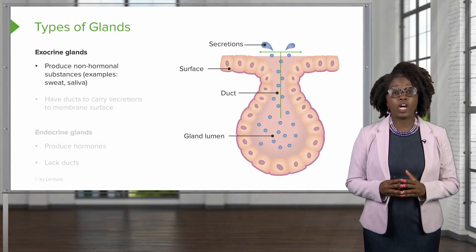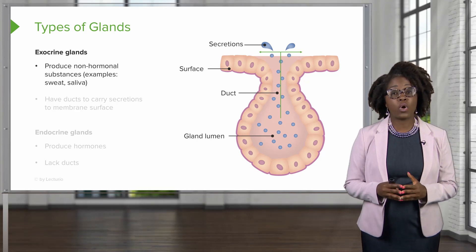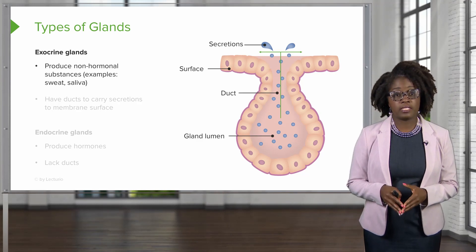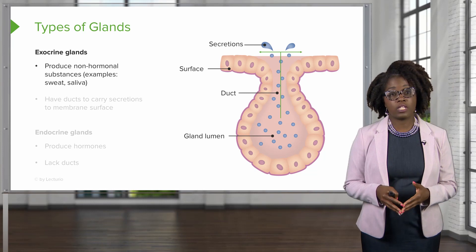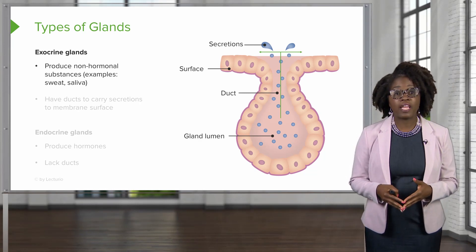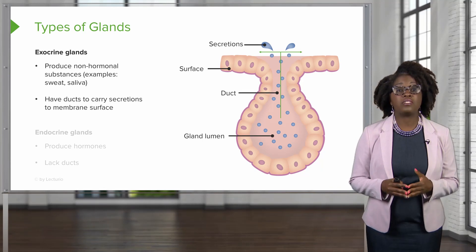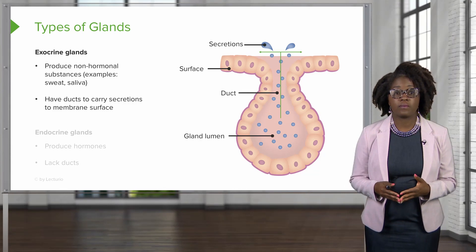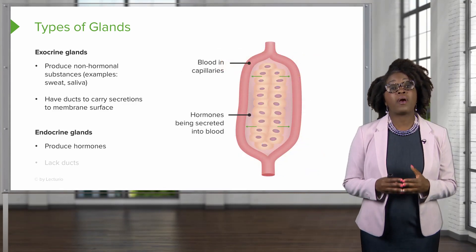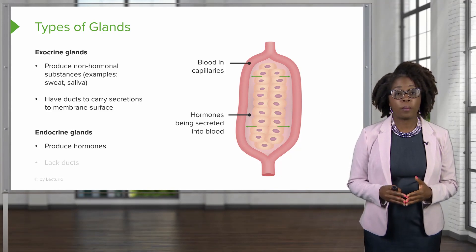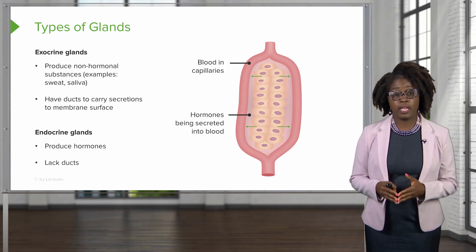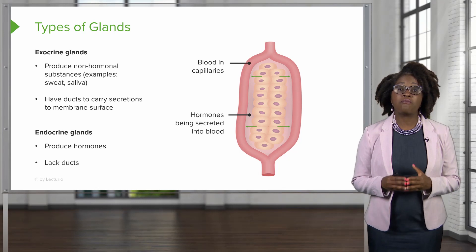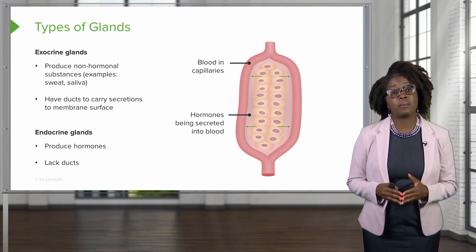When it comes to the endocrine system, it's important to note that there are two types of glands in our body. First we have exocrine glands. These produce non-hormonal substances, such as sweat, saliva, or oils, and they have ducts that carry these secretions to the surface of the membrane. Endocrine glands, by contrast, produce hormones and do not have ducts. It is the endocrine glands that we will focus on when we talk about the endocrine system in these lectures.